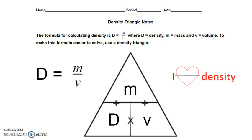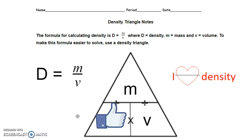So how do we solve a problem with the density triangle? If you're trying to find the density of something, the problem will give you the mass and the volume. What you do is cover up the thing you're trying to find with your thumb. If you're trying to find density, cover up the D with your thumb. What's left in the triangle is mass divided by volume — so you divide.